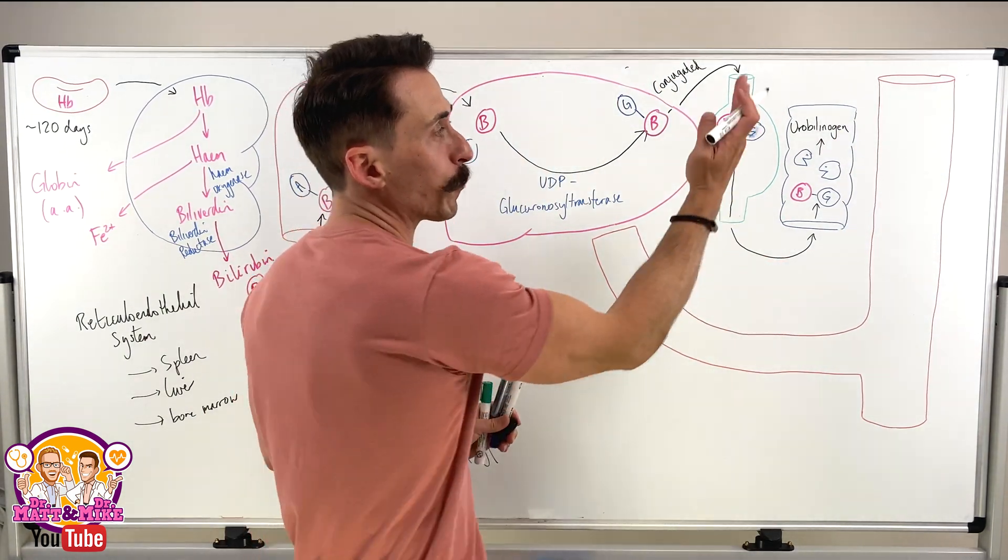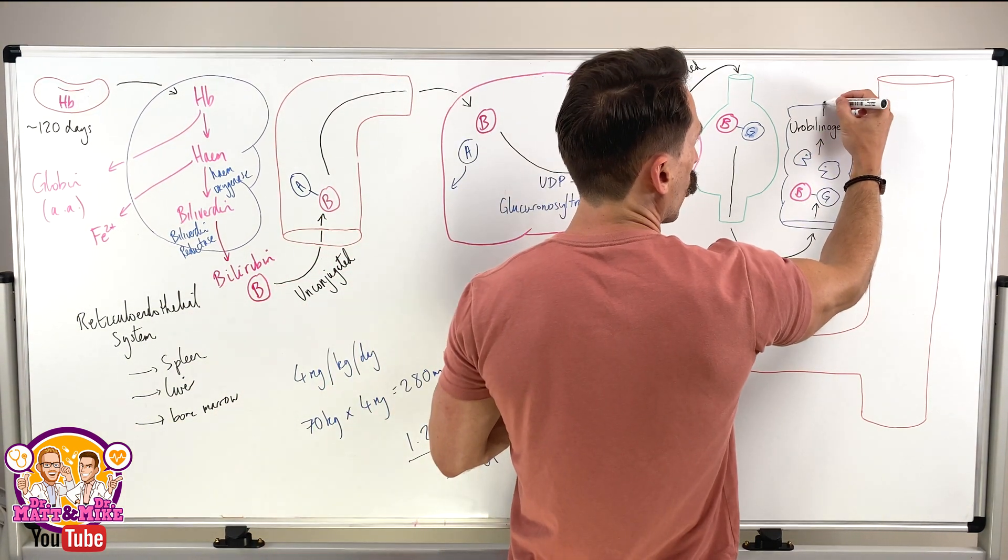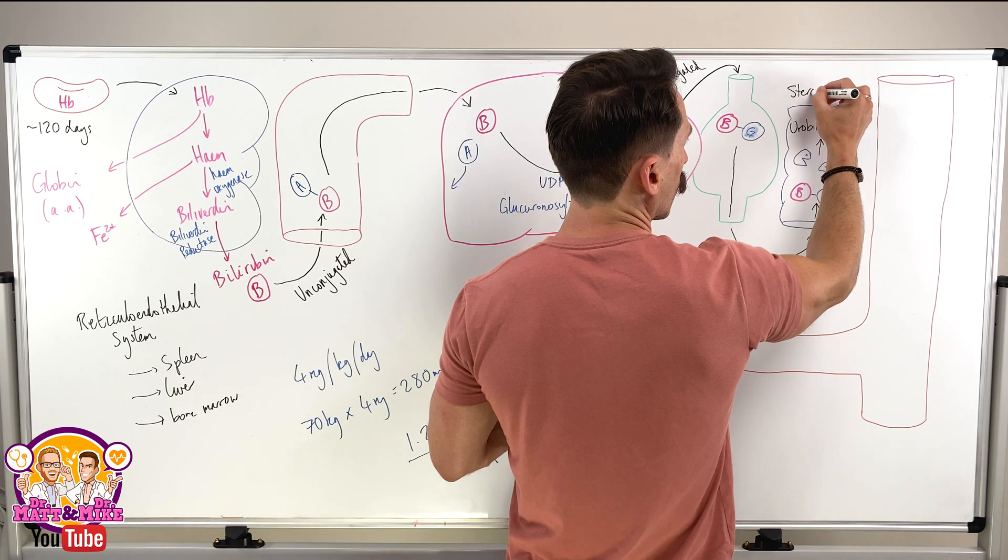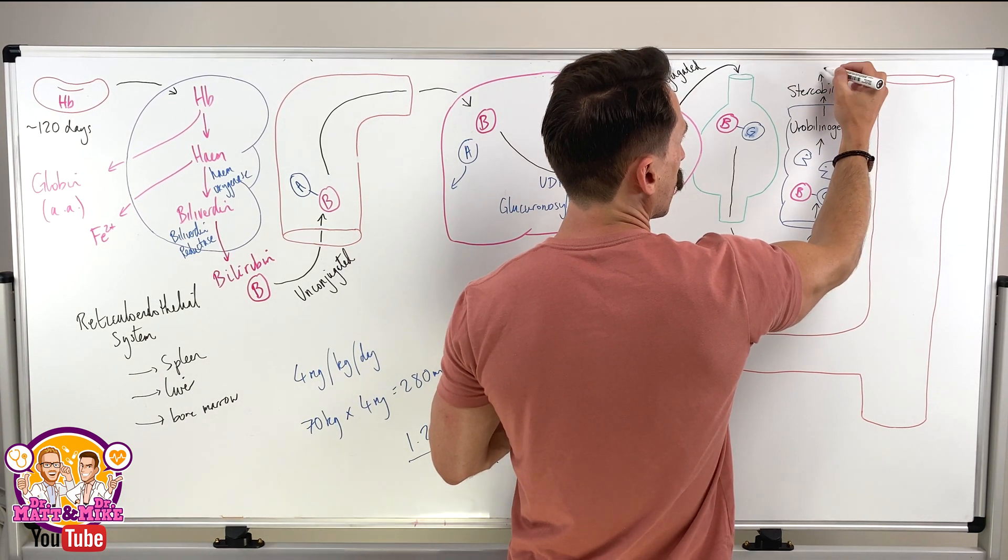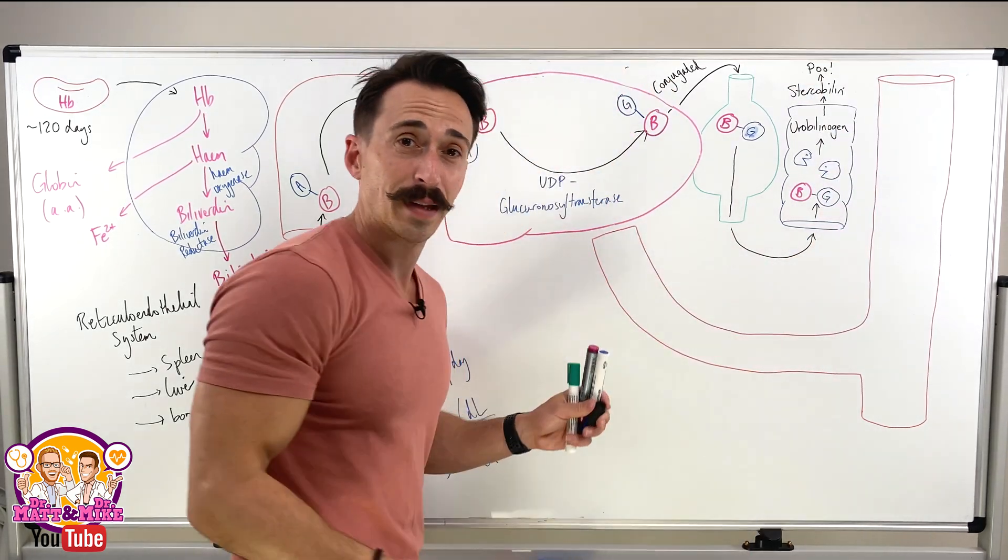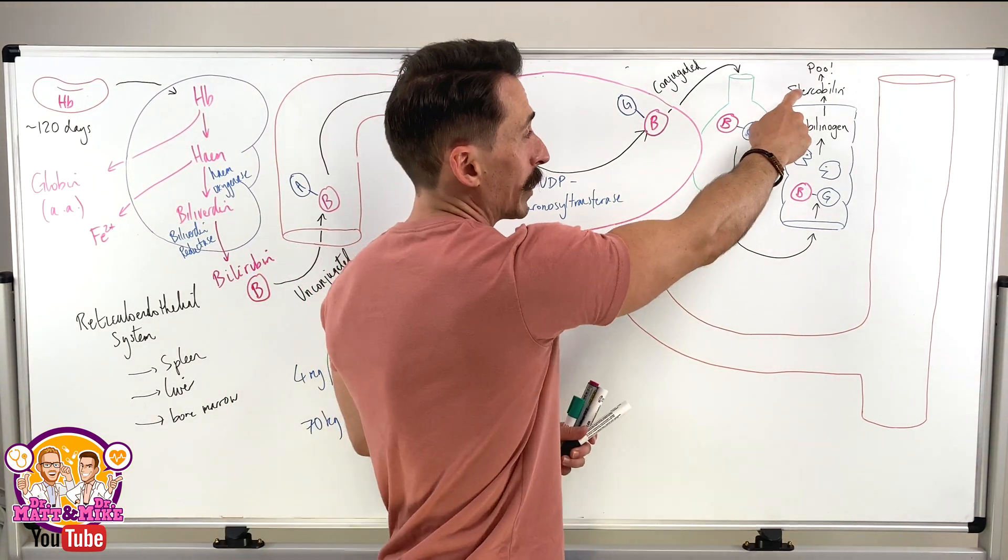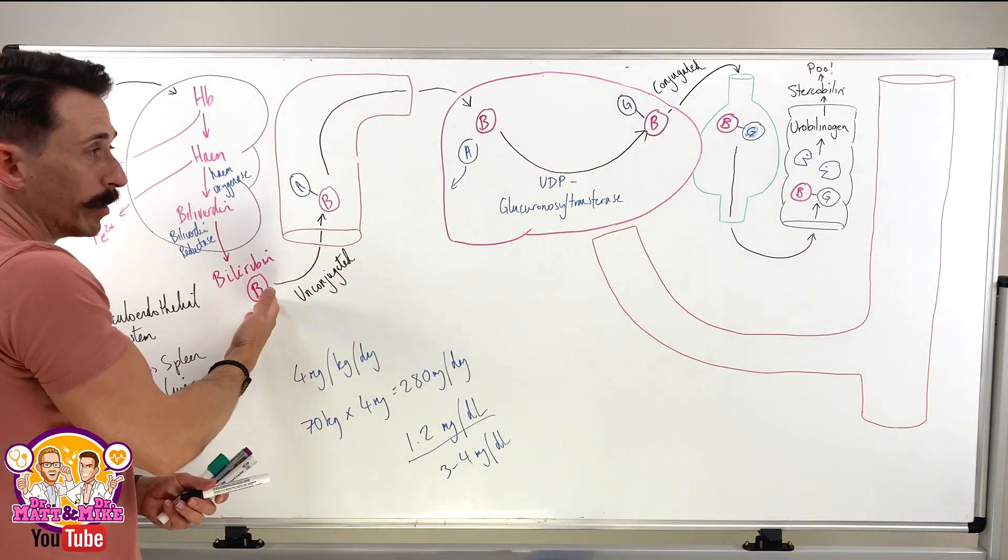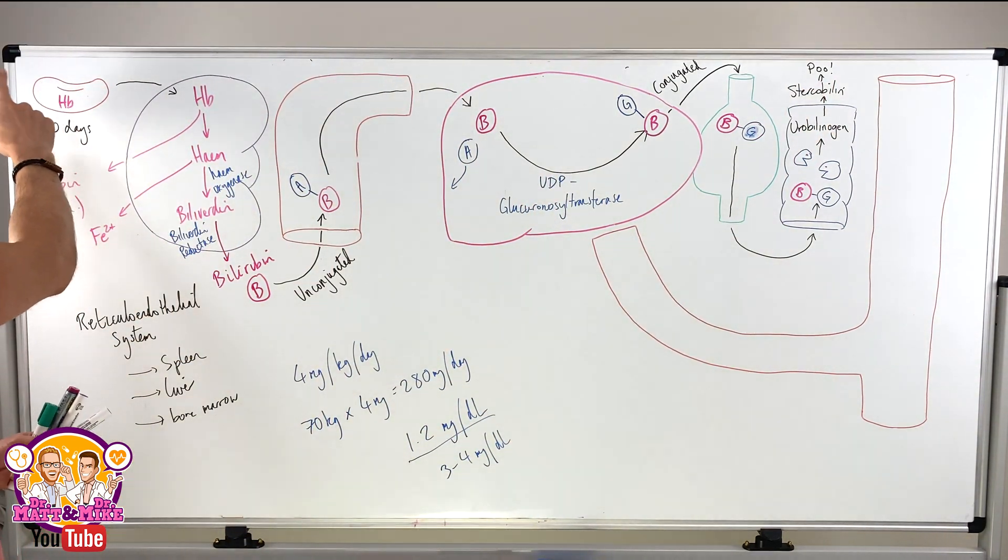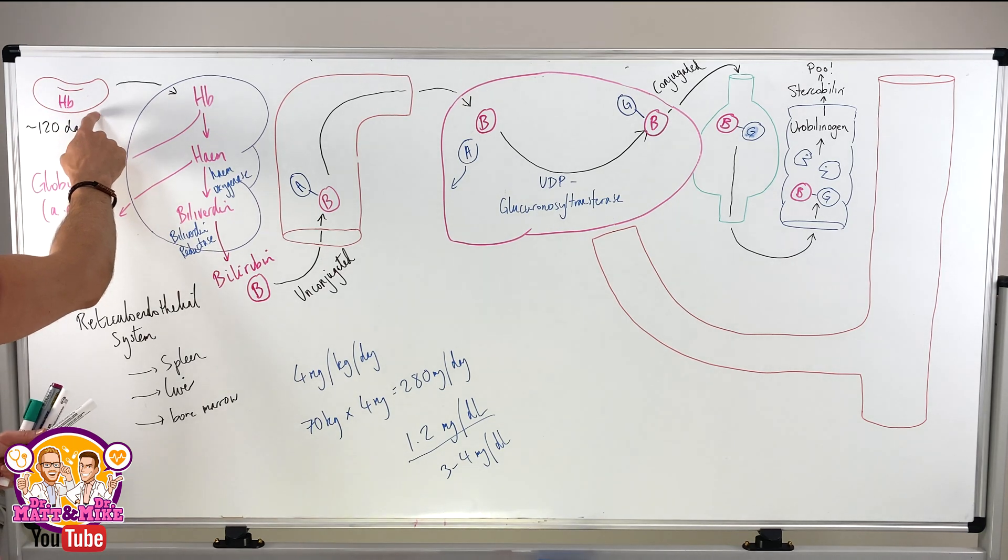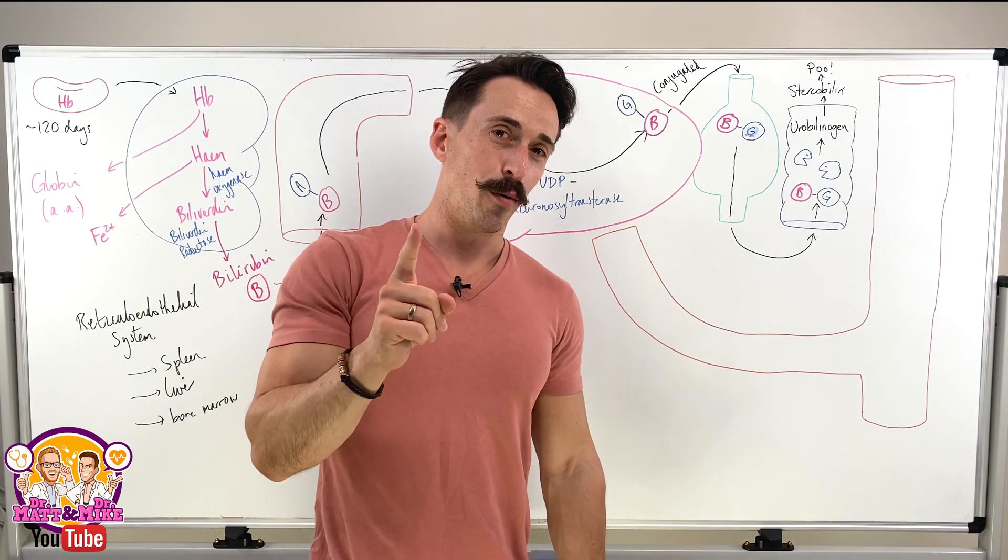This urobilinogen, if it remains in the bowel, turns to something called stercobilin. And this is pooed out. And in actual fact, it's the reason why our poo is brown, this stercobilin. Meaning, bilirubin is the reason why our poo is brown. Meaning, recycling or killing off or metabolizing our red blood cells is the reason why your poo is brown.